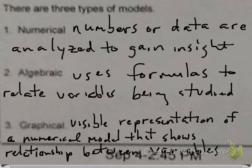Okay, PreCalc kids, this is Section 1 of Chapter 1. Even though we've already done a chapter, it was called Chapter P. So now we're officially into the numerical chapters, Chapter 1. This is the first section. We're actually going to break it up into two parts. So this is Part 1, where we're going to talk about the different types of mathematical models.